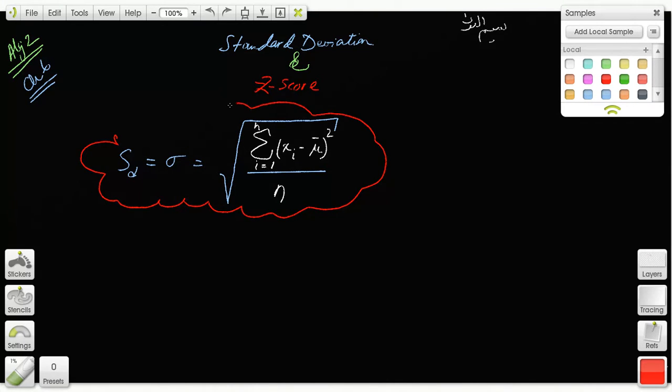So this is the formula for standard deviation. That's very important, but standard deviation is the average distance from the mean.